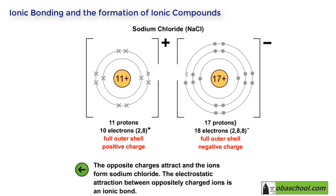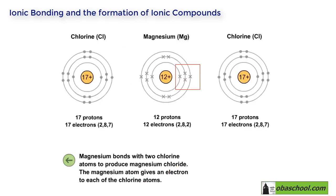The opposite charges attract and the ions form sodium chloride. The electrostatic attraction between the oppositely charged ions is an ionic bond. Another example is the ionic bond formation in magnesium chloride — magnesium bonds with two chlorine atoms to form magnesium chloride.